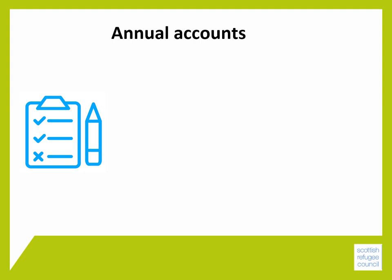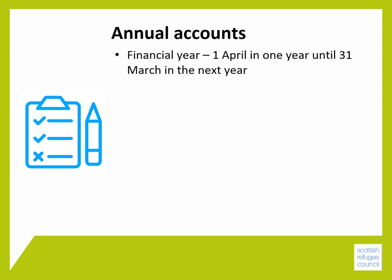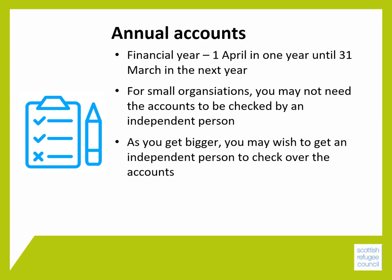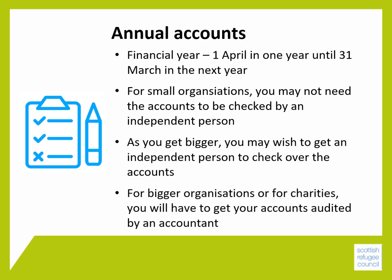The financial year usually runs from the 1st of April in one year to the 31st of March in the next year, although you can agree your own dates for your financial year if you wish, as long as everybody is clear. For very small amounts of income and expenditure, you may not need your accounts to be checked by an independent person. However, as you grow bigger, you may wish to get an independent person — such as someone with bookkeeping experience — to check over the accounts. For bigger organisations or charities, you will have to get your accounts audited by an accountant, so make sure you build this into your running costs and any funding applications.